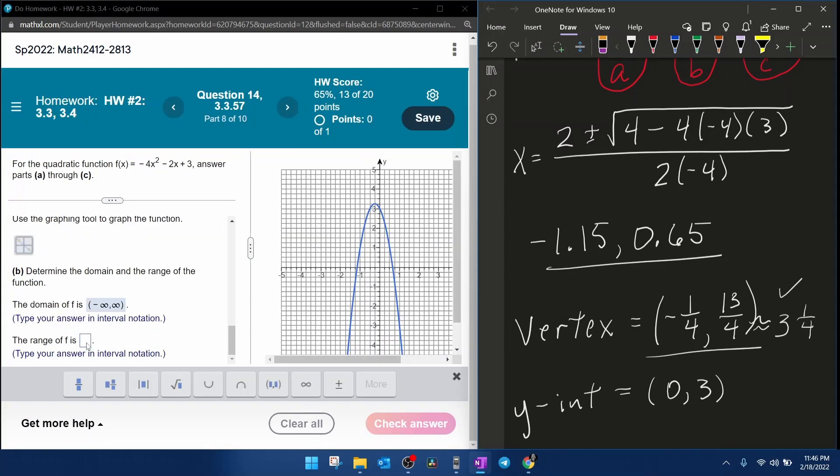Next, the range of f are going to be the values that y can be. Looking at the graph, we can see the lowest that this graph will ever go is minus infinity. The highest it will ever get is the y-coordinate of the vertex. The y is how high. So to input that in interval notation,